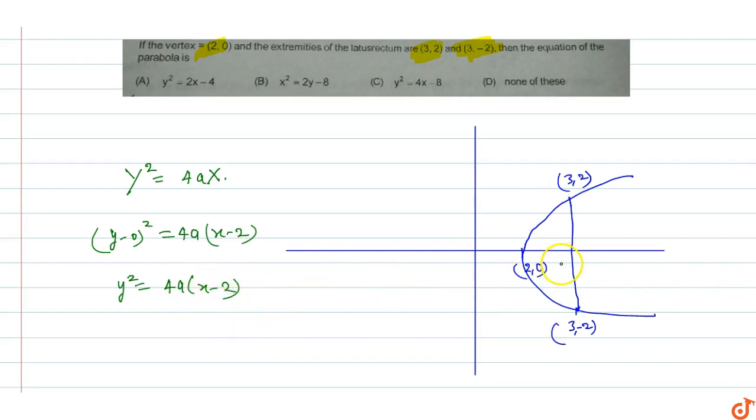To find 'a', we know that the distance between the focus and the vertex equals 'a'. The focus coordinates are (3,0) and the vertex is (2,0), so the distance is 1. Therefore, a = 1.